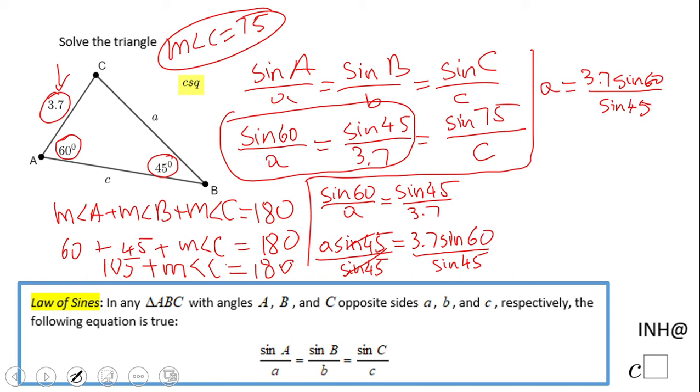3.7 times sine of 60, and a equals 4.5. I rounded to the nearest tenth.